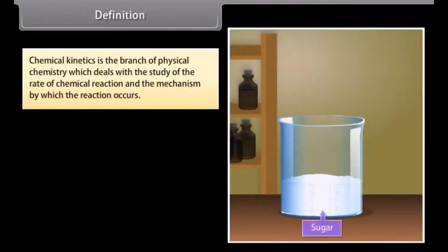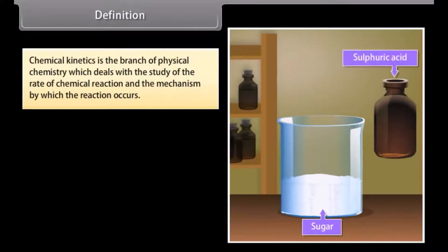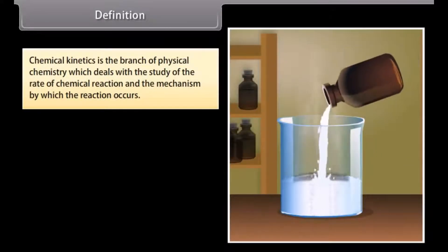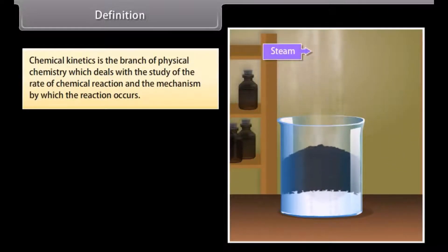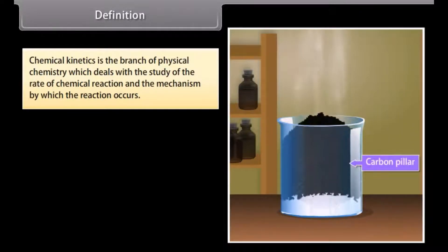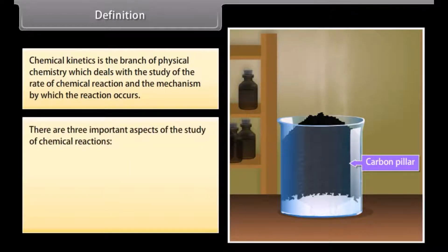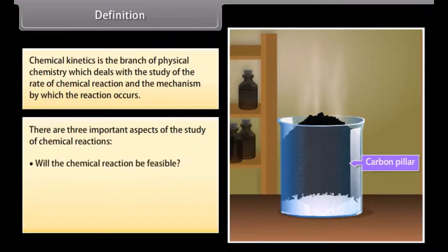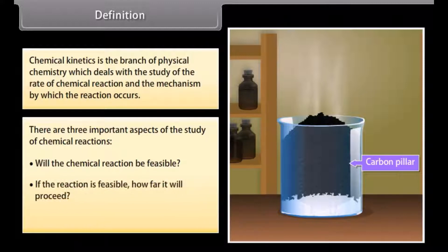Definition. Chemical kinetics is the branch of physical chemistry which deals with the study of the rate of chemical reaction and the mechanism by which the reactions occur. There are three important aspects of the study of chemical reactions: will the chemical reaction be feasible? If the reaction is feasible, how far will it proceed? How fast will a reaction occur?